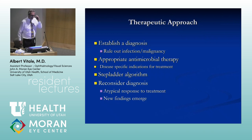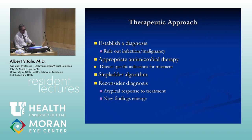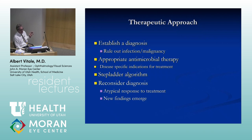Fundamental to treating uveitis is establishing a diagnosis. As we were talking about last time, it's really essential to establish a diagnosis, even if it's idiopathic, to exclude an infection or malignancy. If you have an infection, you'd treat with the appropriate antimicrobial therapy. And if it's non-infectious, there are disease-specific indications for treatment.